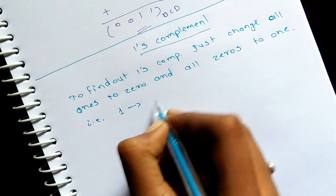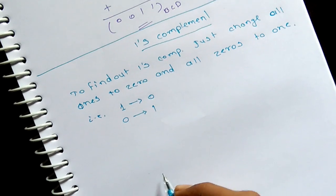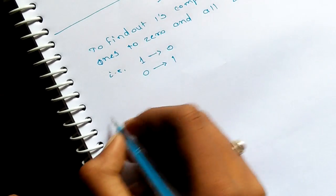All ones to convert it into zero and all zeros to convert it into one. Okay, so examples.